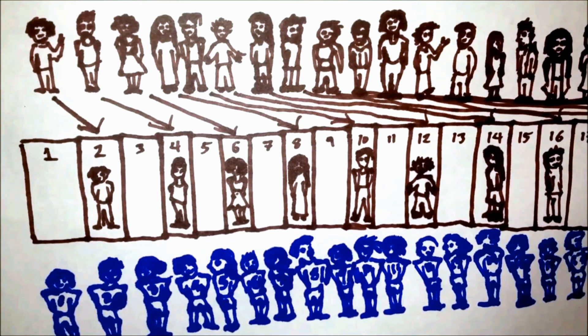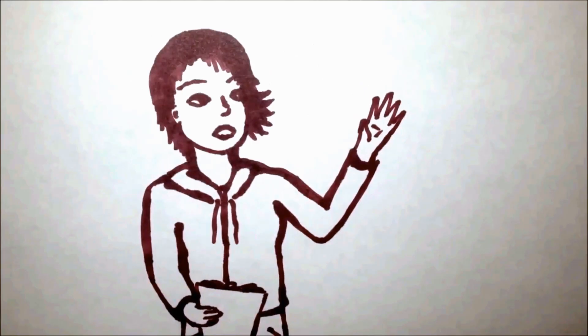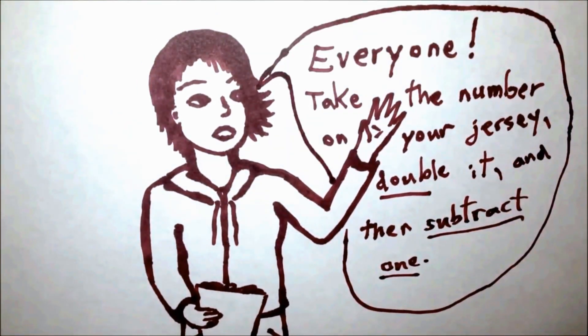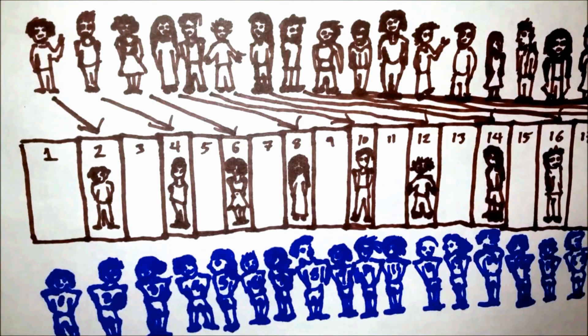Now you just need to get the football players into the odd numbered rooms. So you have the coach tell them: 'Everyone take the number on your jersey, double it, and then subtract one. That number is your room number.'